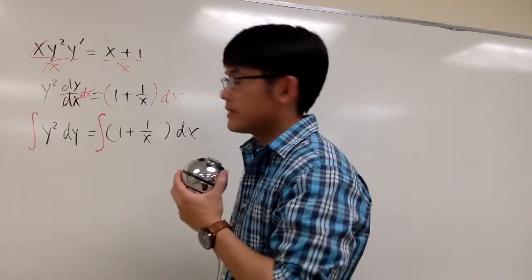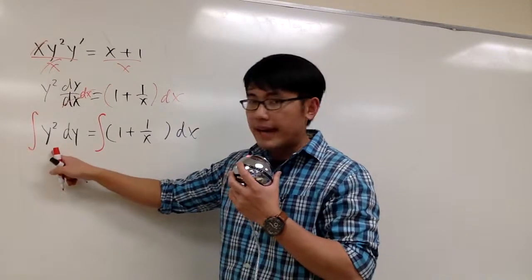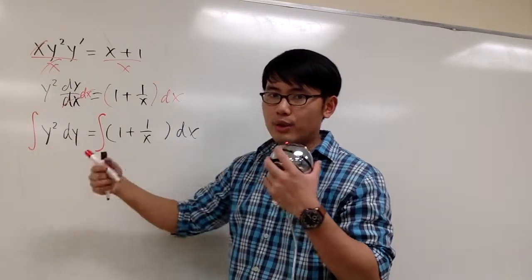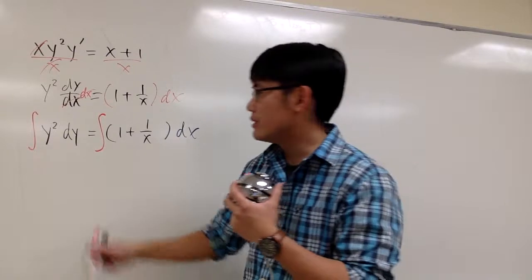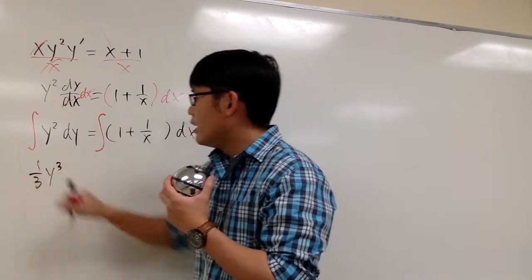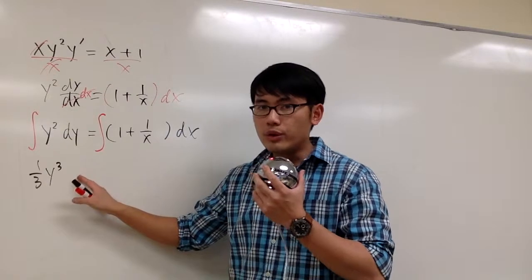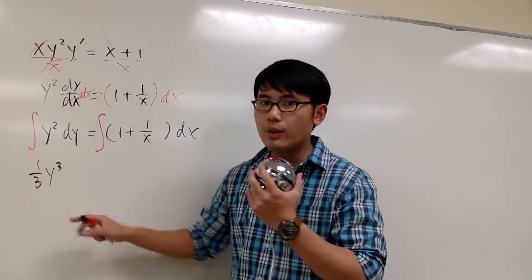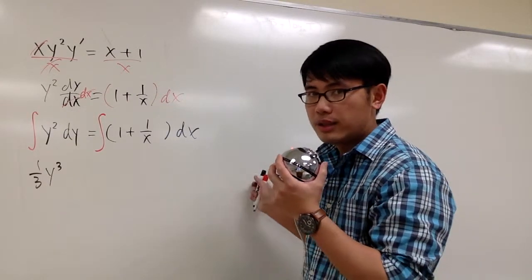Integrate this, integrate that. On the left-hand side, we have y squared, so we just add 1 to the exponent, divide it by 3, right? So we have 1 third y to the third power. And a small shortcut is, we don't need to write a plus c on the left-hand side, we just need to put a plus c on the right-hand side.